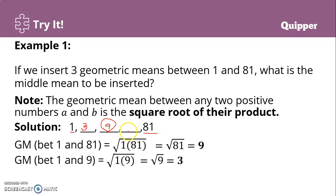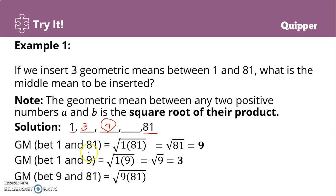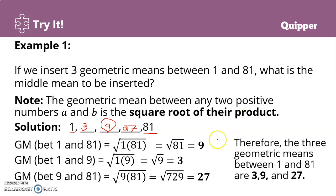To find the third geometric mean, we solve for the square root of 9 times 81, which gives us the square root of 729, and that's 27. Therefore, the three geometric means between 1 and 81 are 3, 9, and 27, and the middle mean is 9.